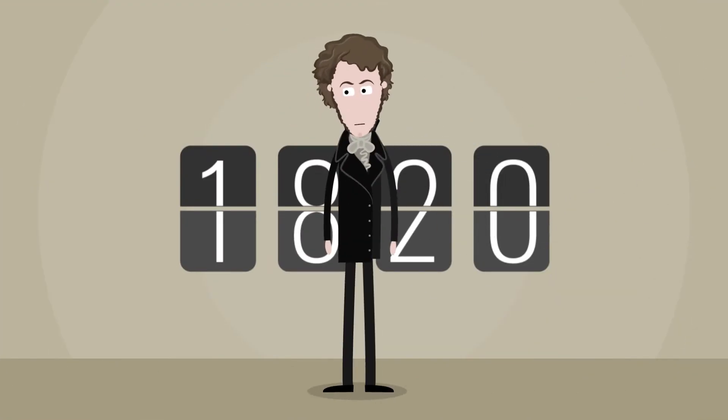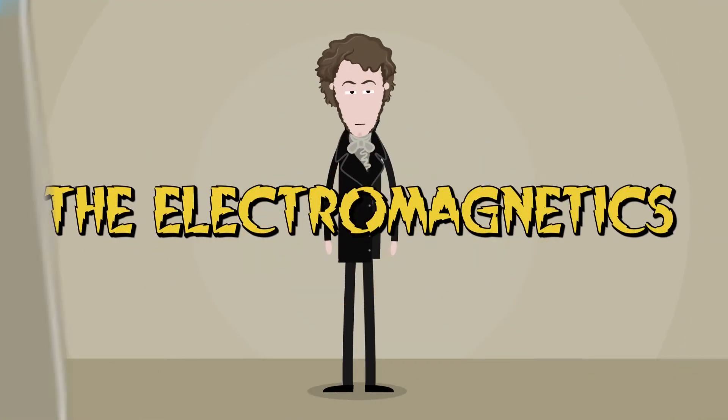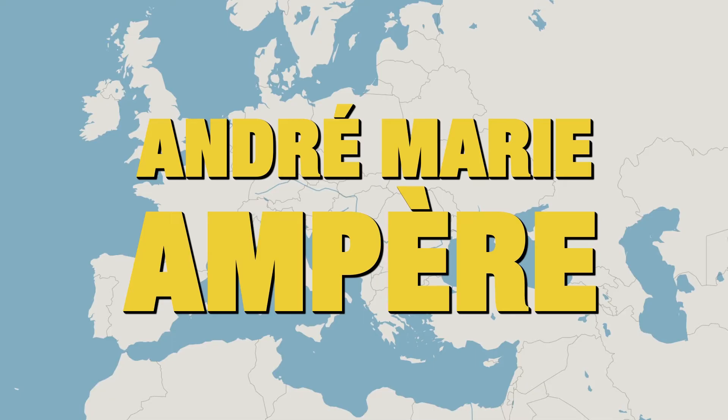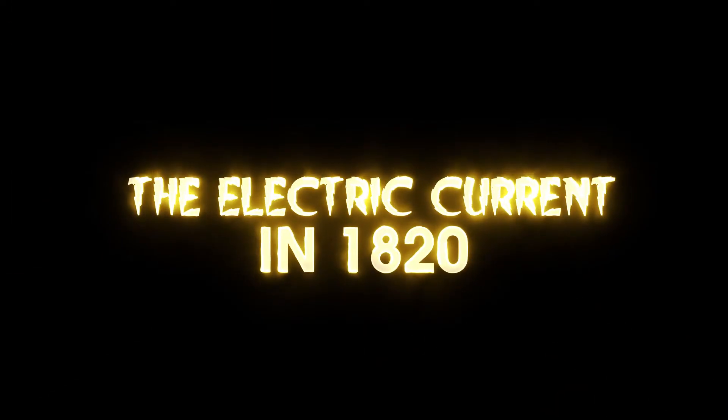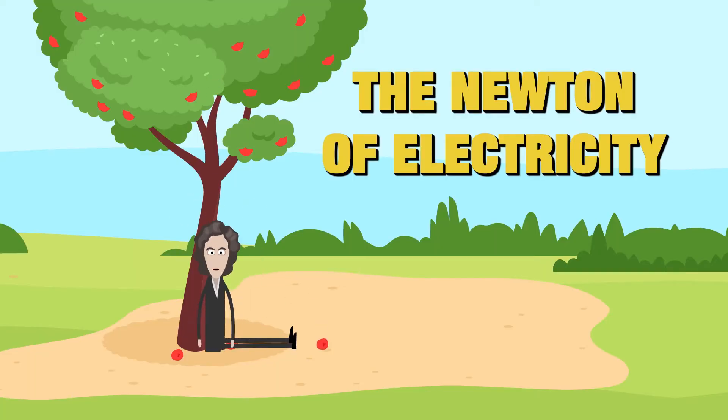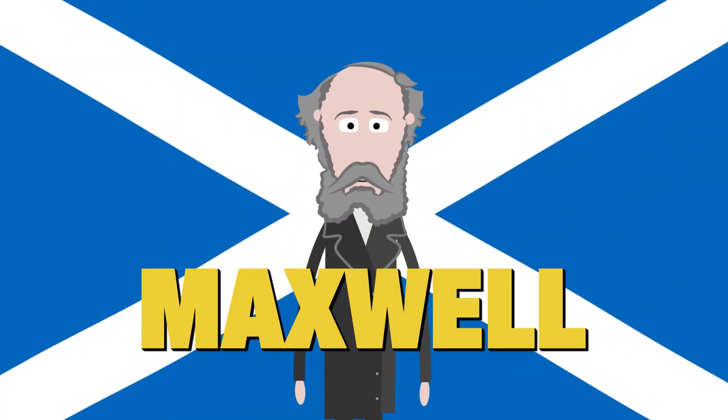It's 1820, and Ampère discovers electromagnetics. André-Marie Ampère is the great scientist born in Lyon who discovered the electric current in 1820, the Newton of electricity, as the great physicist Maxwell had described it.